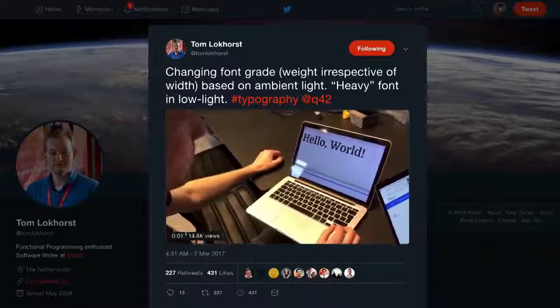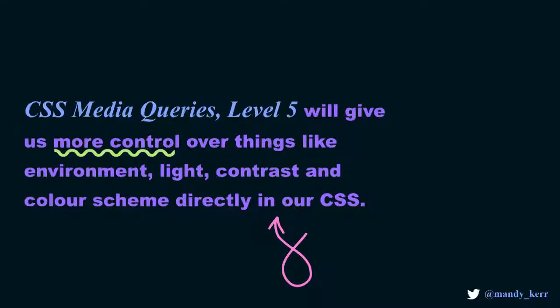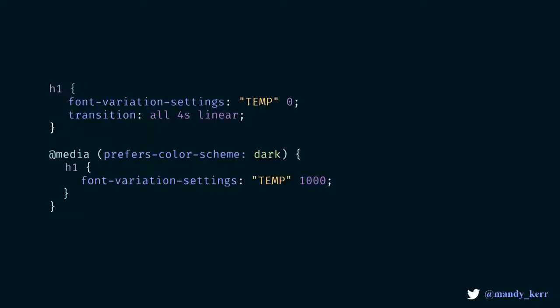We can create more sufficient contrast based on the user's environment or their current experience. There's currently a bunch of work being done with media queries in CSS which will aim to give us more control over our designs based on environments, light contrast, and colour schemes — so we can improve the legibility of our text depending on these environments. One really great one that you can have a play with now, available on macOS in Safari's technical preview, is dark mode. You can use the media query prefers-color-scheme and set it to dark.